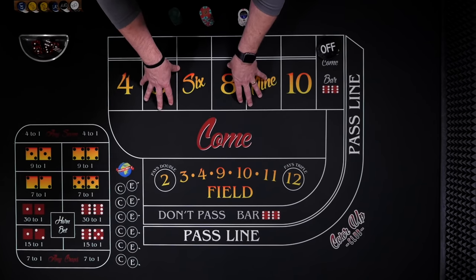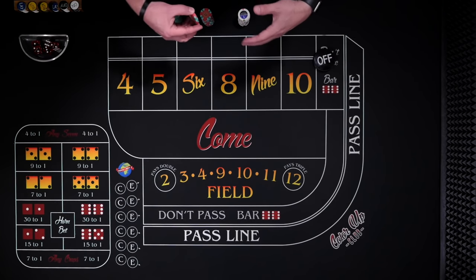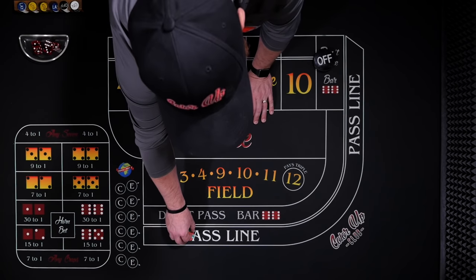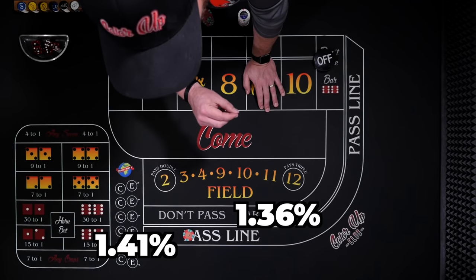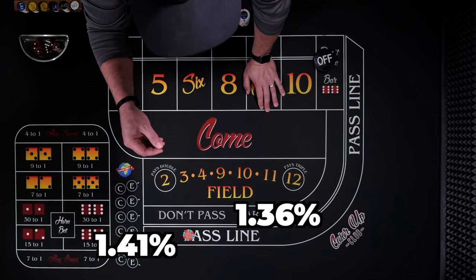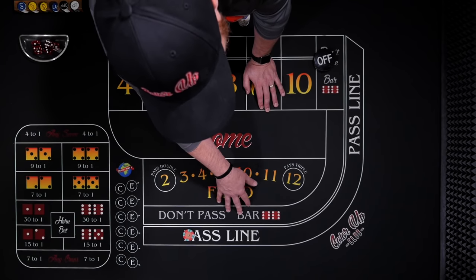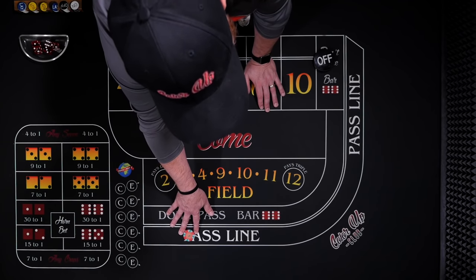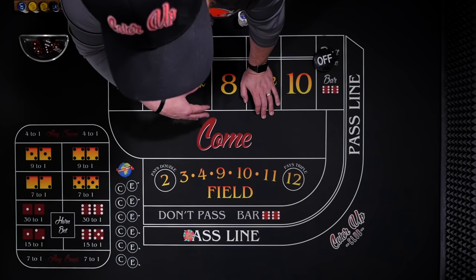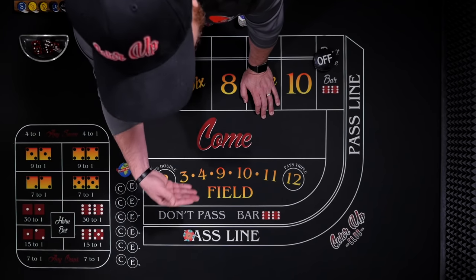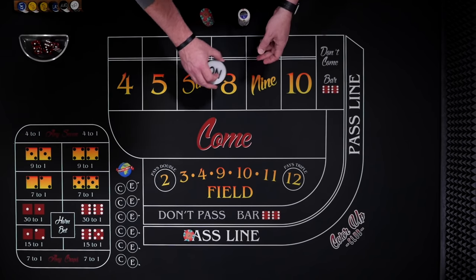When the puck is off, we're starting a new game, so we're going to start on the pass line bet. Now technically the don't pass is ever so slightly better — a hundredths of a percent lower house edge — but most players don't play the don't pass. Most players stick to the pass line. Mathematically we're talking about pennies difference over hundreds and hundreds of dollars bet, so really just bet the side that you like.